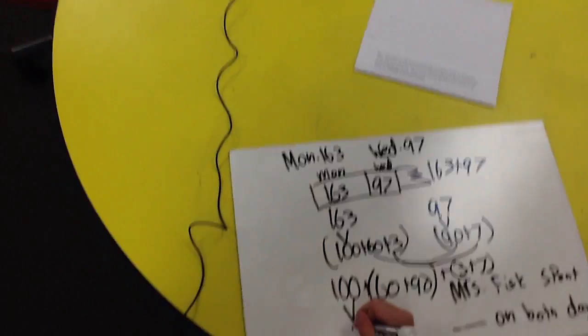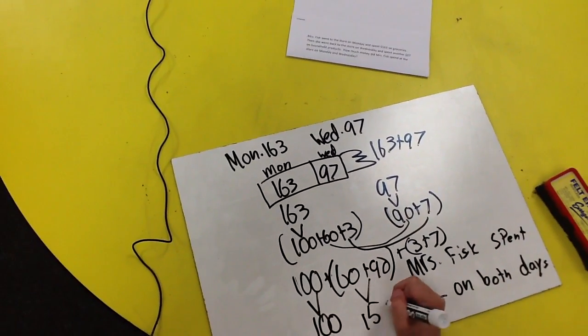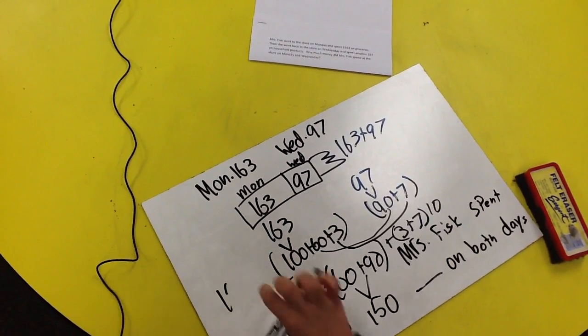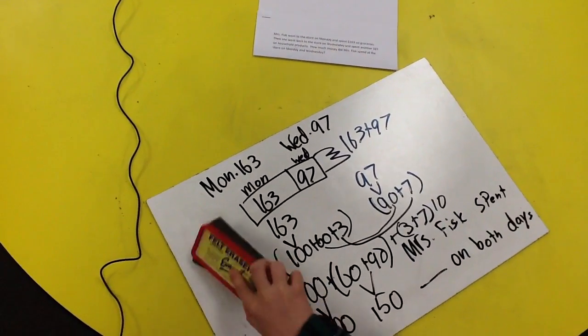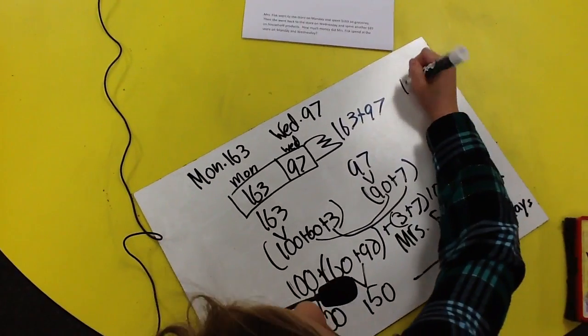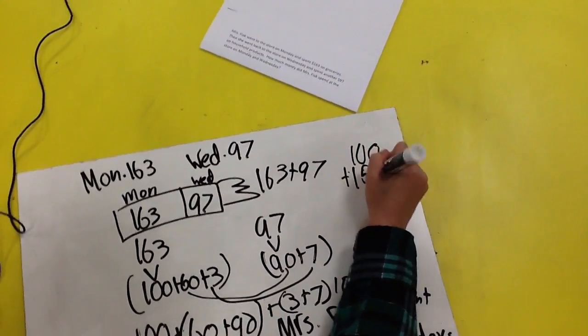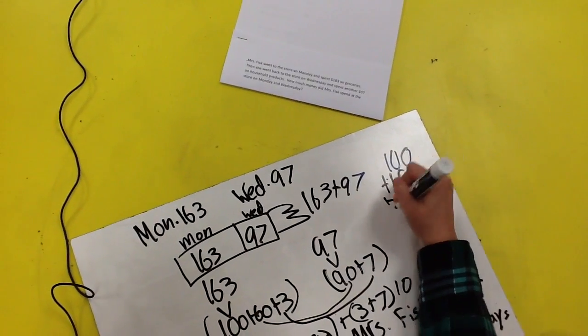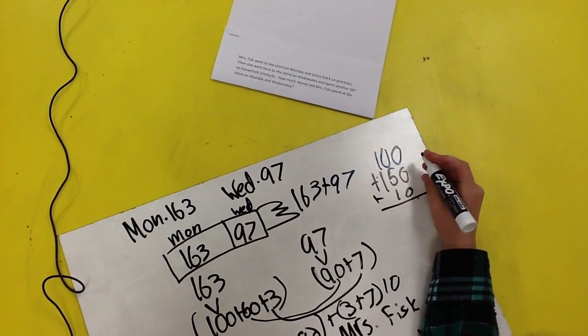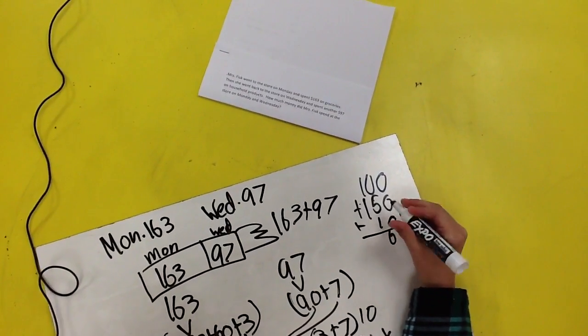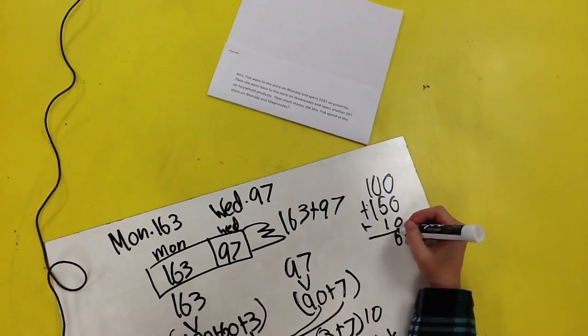Well, that's $100. That's $150. And this is $10. $100 plus $150 plus $10. Well, $0 plus $0 plus $0 is $0. $5 plus $1 plus $0 is $6. $1 plus $1 is $2. So the sum is $260.